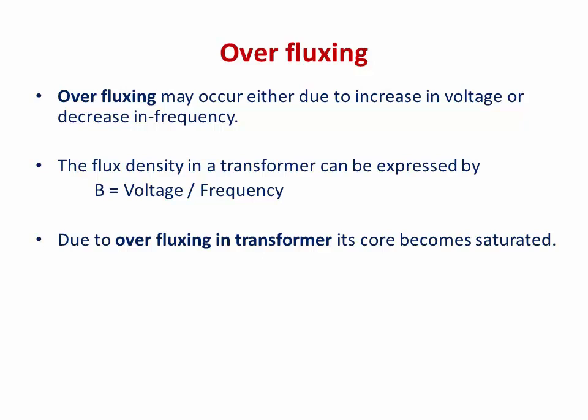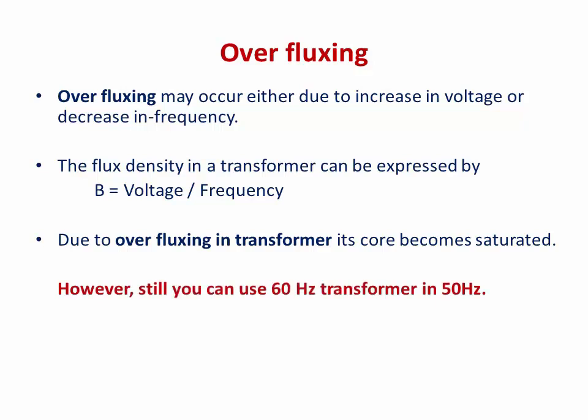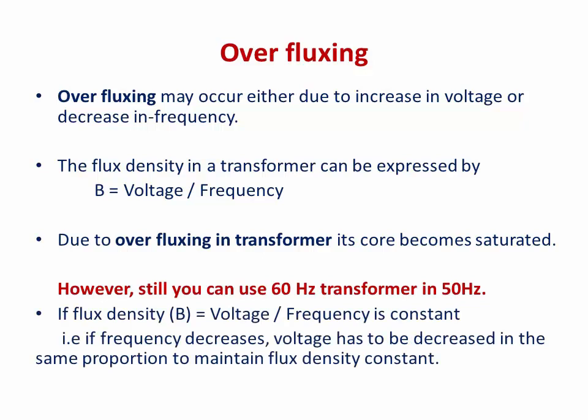How do we do that? If we keep V/f constant — that is, flux density in the transformer is constant — you can still use a 60 Hz transformer on a 50 Hz supply. If the frequency decreases or increases, the voltage must be decreased or increased in the same proportion to maintain the same flux density. If you do so, you can operate a 60 Hz transformer on a 50 Hz supply source.